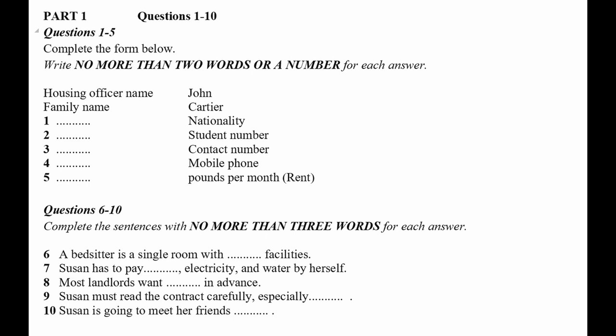Part 1. Listen to the conversation between John, who is an accommodation officer for overseas students, and Susan, a Canadian student who wants an apartment, and complete the form. Look at questions 1 to 5 on the form now.